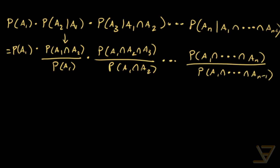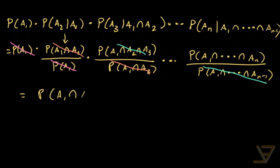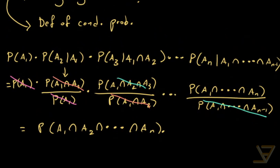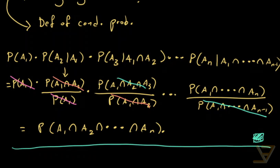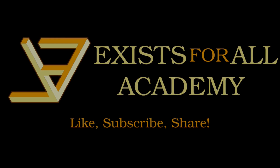What you should notice here is that we have cancellations. This cancels with this, then this cancels with this, and this cancels with what comes next, all the way through to cancellations down here. What we're left with is simply the probability of A_1 intersect A_2 intersect all the way through to A_n. And that proves the chain rule for events in probability. Thanks for watching and I'll see you next time.